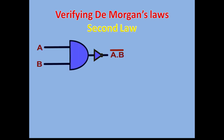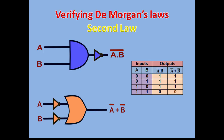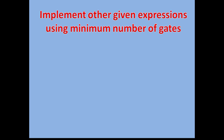In the second law, the left-hand side is A AND B, whole bar, which equals A-bar OR B-bar. We'll verify this truth table in SimulIDE as well.